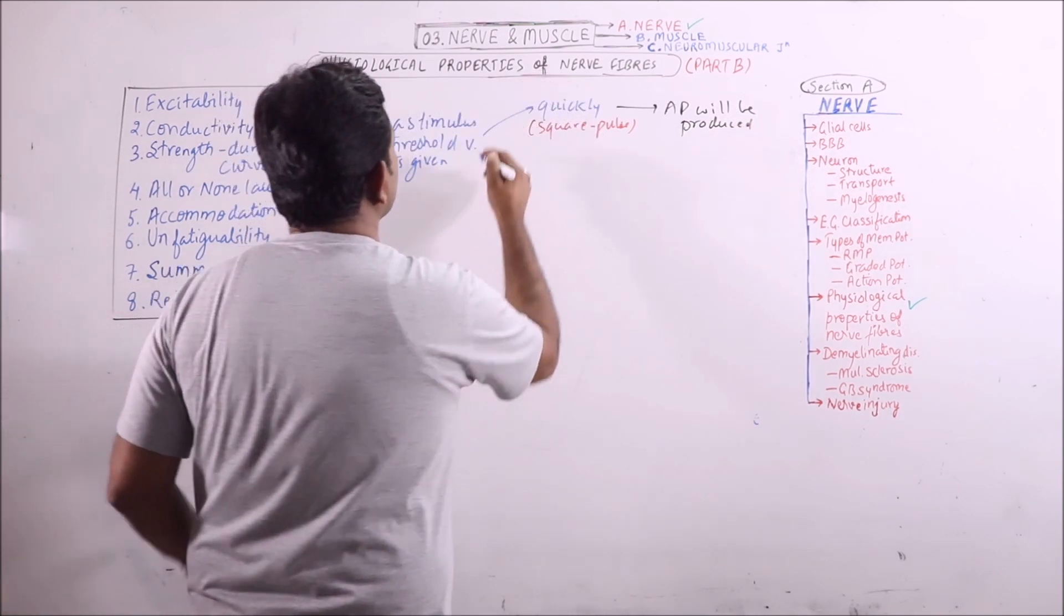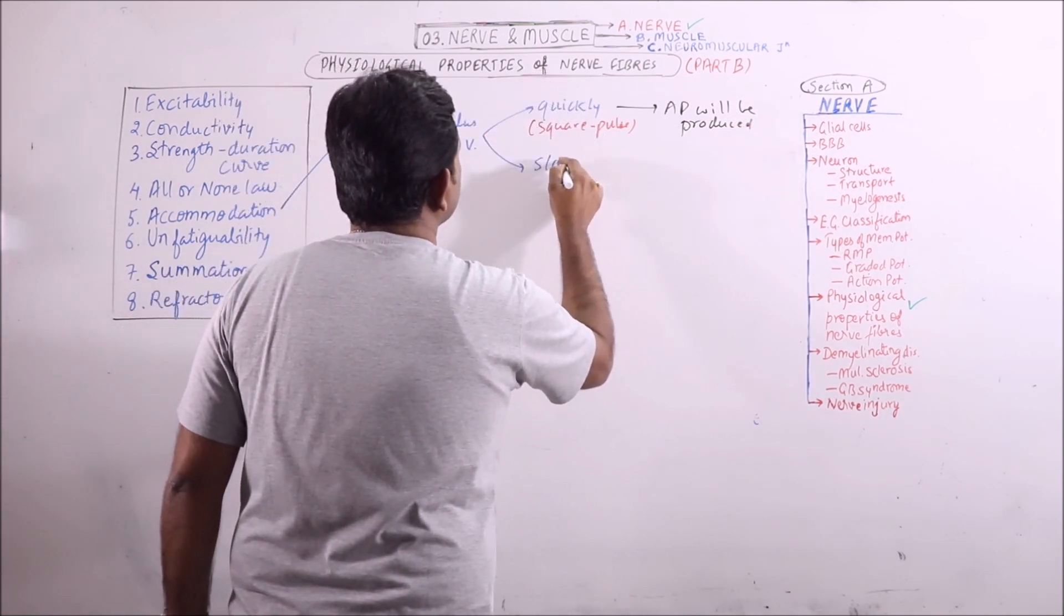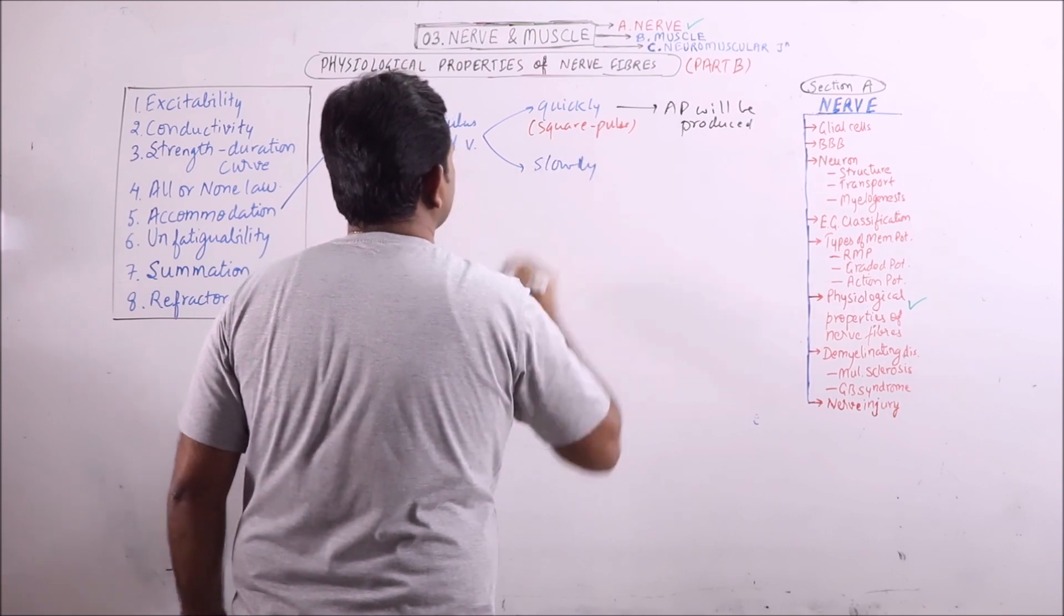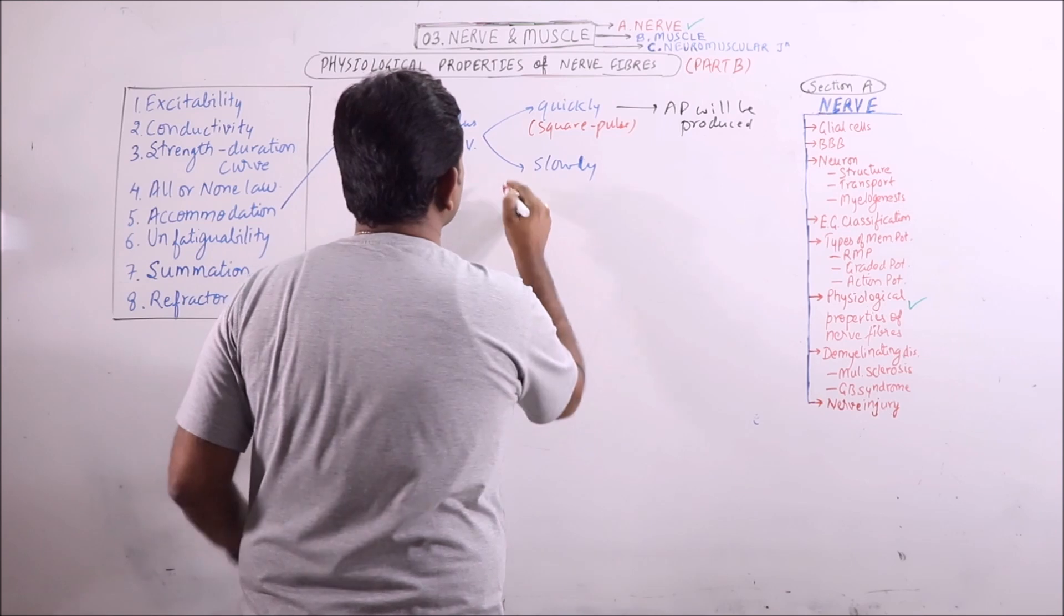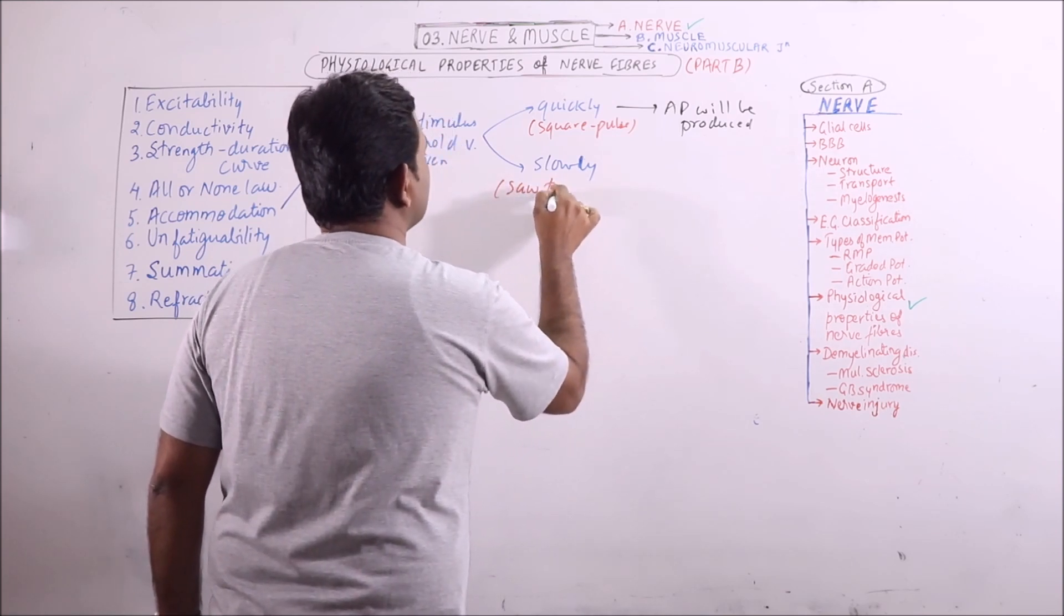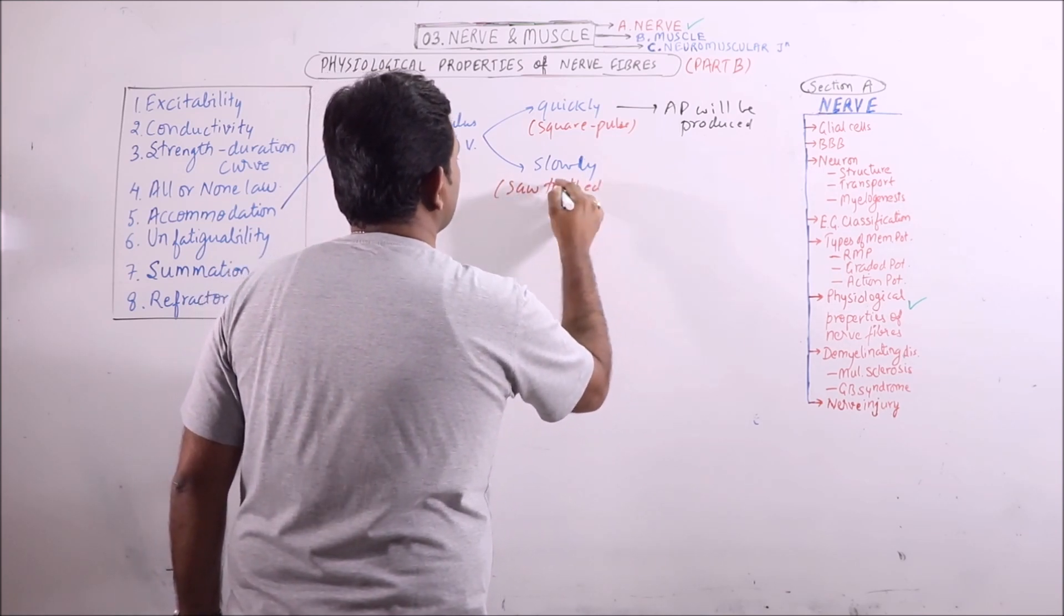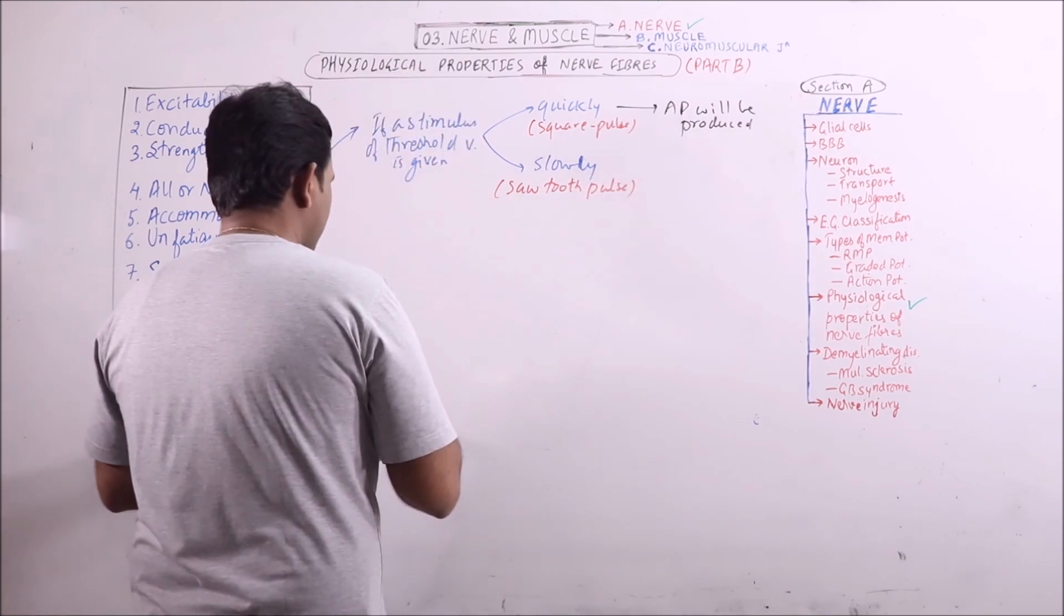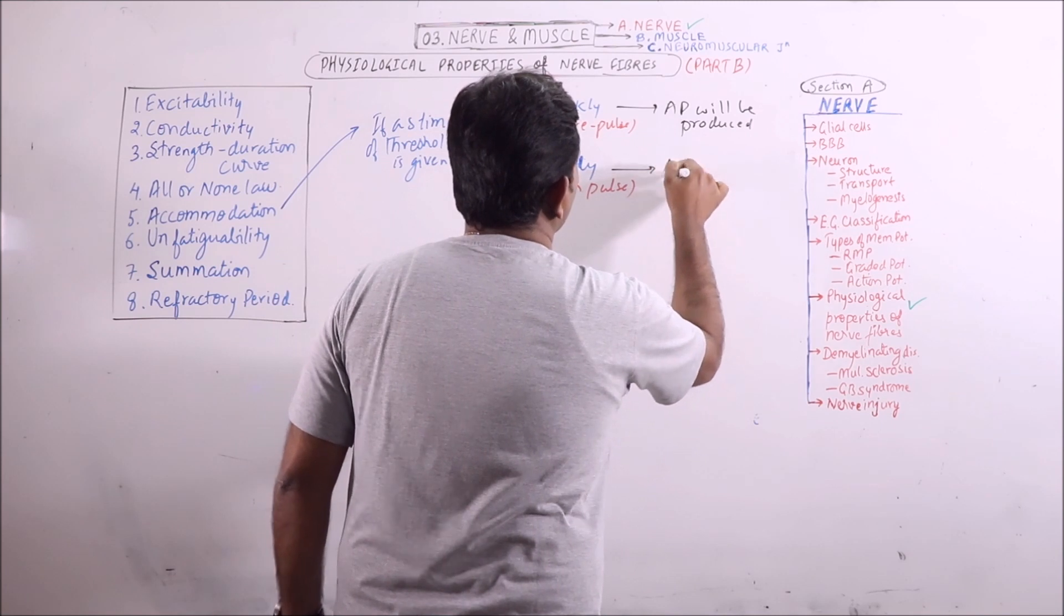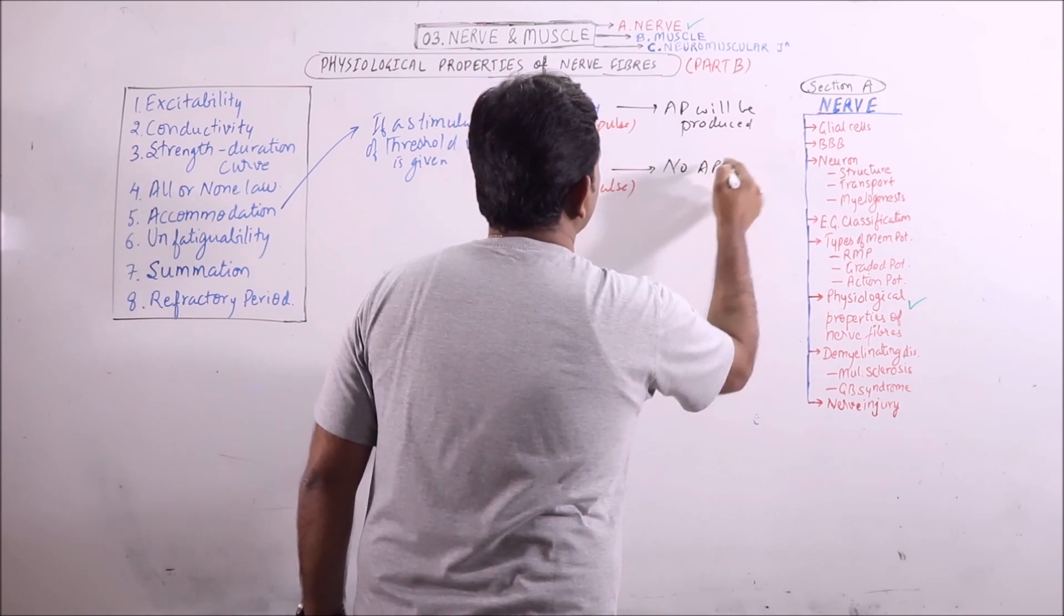But if it is given very slowly, which is also known as saw toothed or saw tooth pulse, then no action potential is generated.